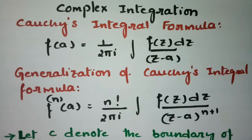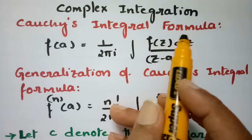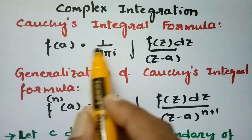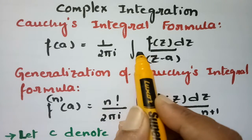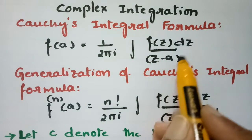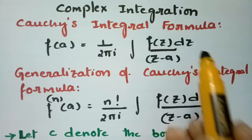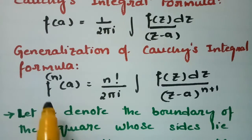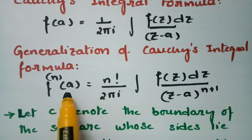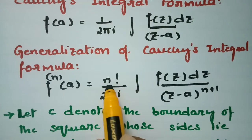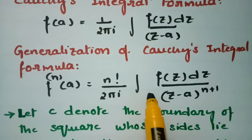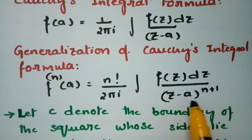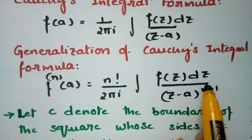Today's problem is from complex integration and we are going to use Cauchy's integral formula to evaluate it. Cauchy's integral formula states: f(a) = (1 / 2πi) ∮ f(z) / (z − a) dz. The generalization gives the nth derivative: f⁽ⁿ⁾(a) = (n! / 2πi) ∮ f(z) / (z − a)^(n+1) dz.